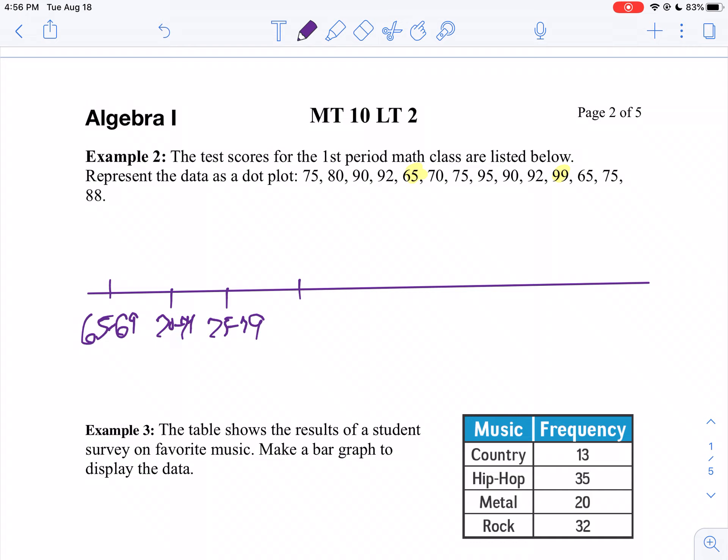Then I'll go 80 to 84, 85 to 89, and 90 to 94. And my last one will be 95 to 99. So I'm going to put my dots in bins, pretty much.